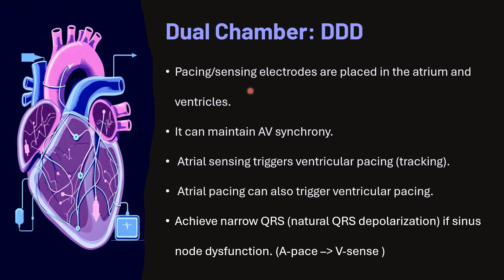For dual chamber pacing, the pacing and sensing electrodes are placed in both the atrium and ventricle, maintaining AV synchrony. Atrial sensing triggers ventricular pacing — this is called tracking. Atrial pacing can also trigger ventricular pacing. This achieves a narrow QRS complex and natural QRS depolarization. If there is sinus node dysfunction, the atrium will be paced. This is the most physiological type of pacemaker, avoiding pacemaker syndrome and maintaining good hemodynamics.